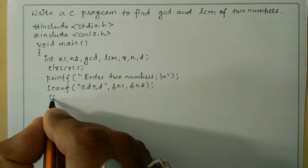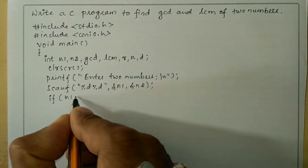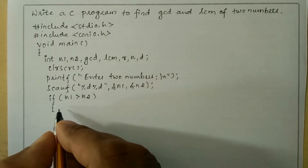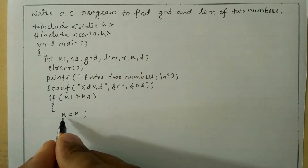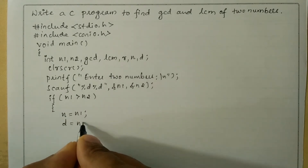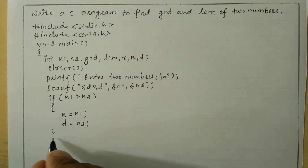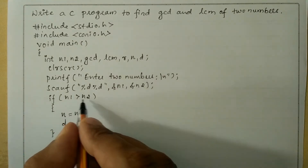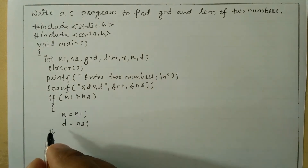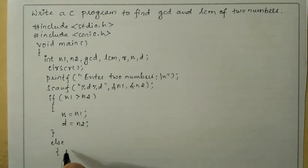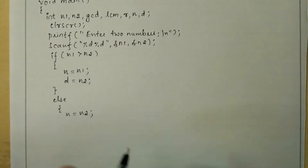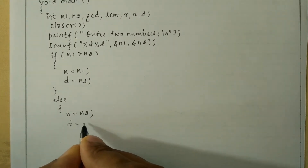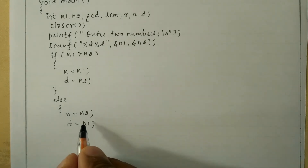Now we are going to check the condition: if n1, the first number, is greater than the second number, then numerator n is equated with n1 and denominator d is equated with n2. If this is false, the else part initializes n equal to n2 and denominator d equal to n1.